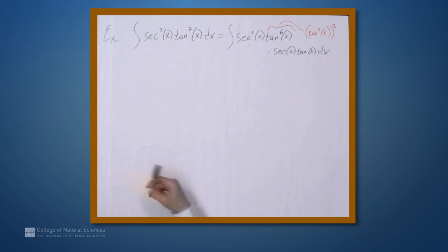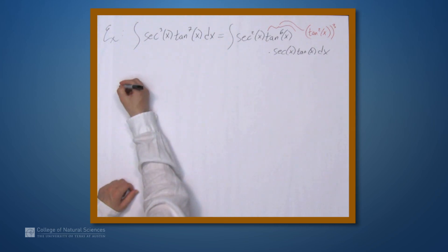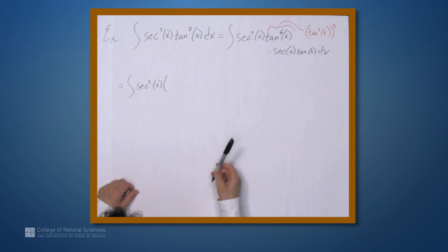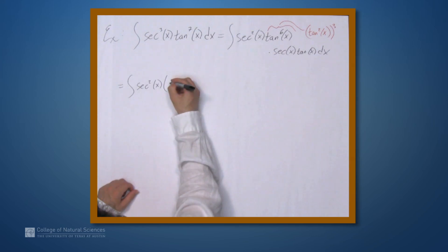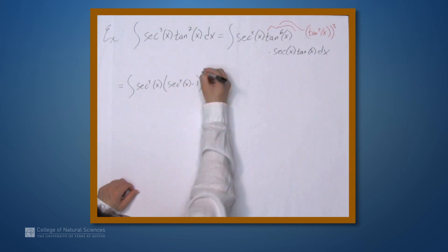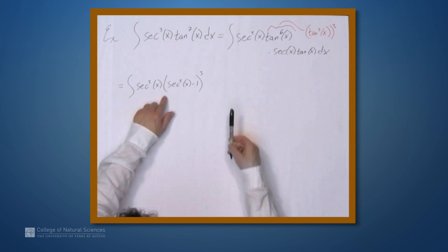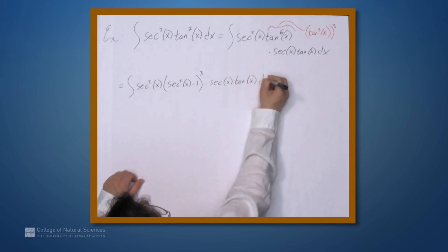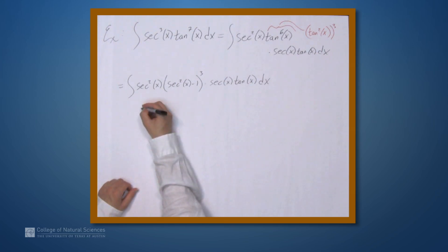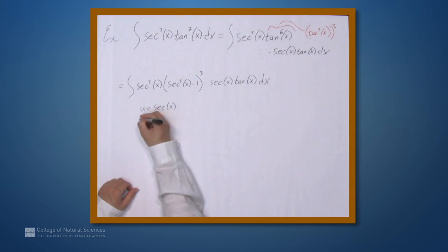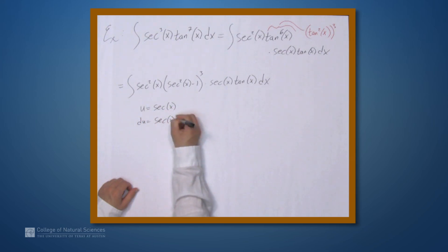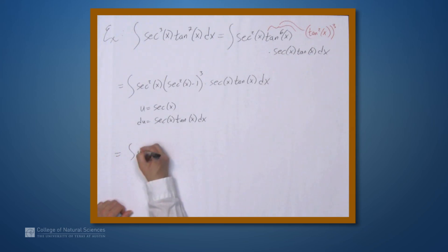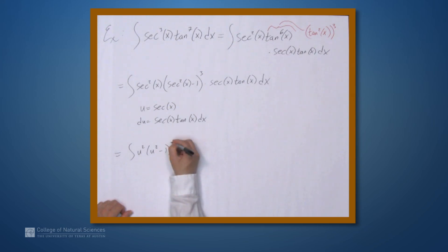We can rewrite tan²x in terms of secant, so the integral becomes sec²x · (sec²x - 1)³ · secx · tanx dx. We now make the substitution u = secx, so du = secx · tanx dx. The integral becomes the integral of u² · (u² - 1)³ du.